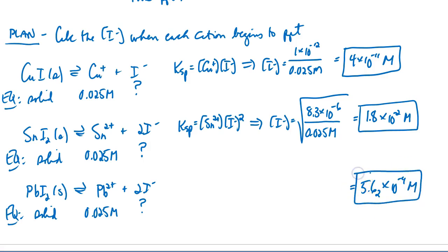I think we have figured out the precipitation order. The ion that required the least iodide to begin to precipitate is copper-1, then it'll be lead-2, and then the ion that needed the most iodide to begin to precipitate is tin-2. This is the precipitation order.